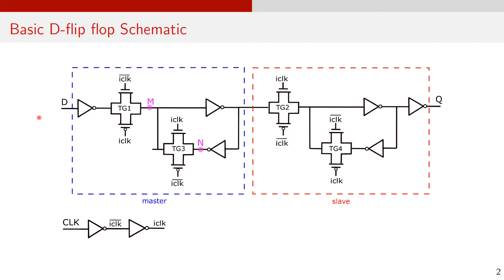Here, the data input port is denoted by D, the clock input by CLK, and the data output by Q. The basic building blocks of this flip-flop are inverters and transmission gates.